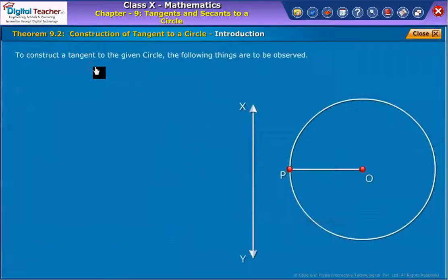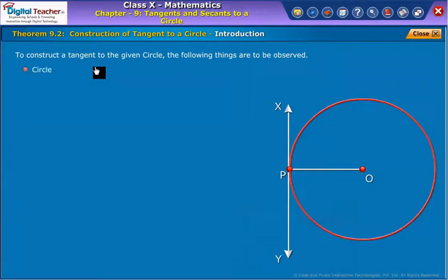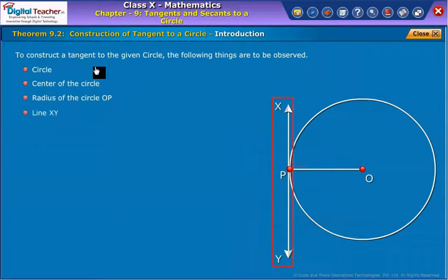To construct a tangent to the given circle, the following things are to be observed: circle, center of the circle, radius of the circle OP, line XY, common point of contact P. OP is perpendicular to XY at given point P.